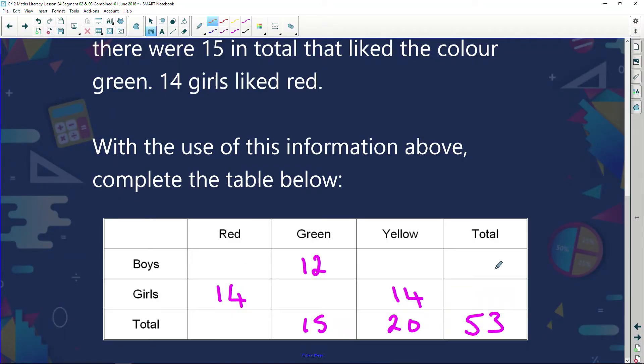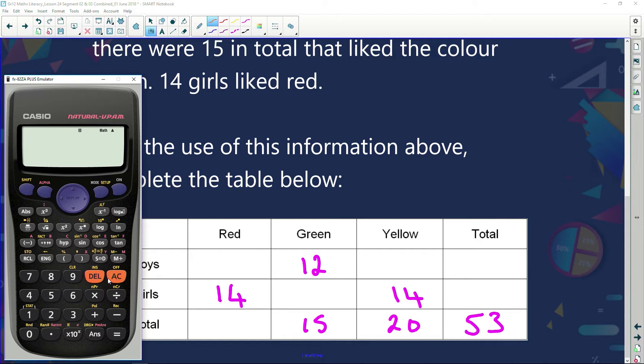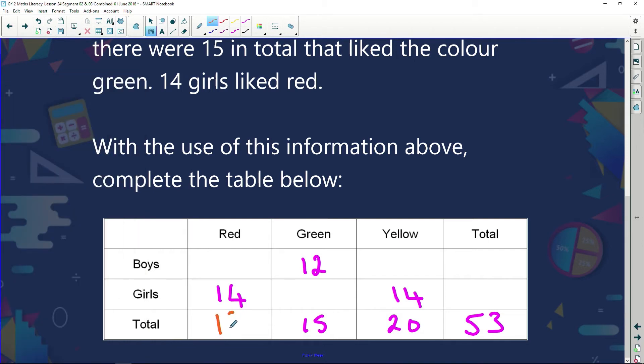Remember, to fill in the missing bits, we've got to find either rows or columns that have only got one bit of information missing. We've got a total of 53, so we're going to say, Mr. Calculator, we need your assistance and guidance here. I've got a total of 53 students, of which 20 love yellow, 15 like green, which leaves me with a total of 18 that like red. Now because I have this, I can work out how many boys like red. Well, if there are 14 girls and a total of 18, there must be 4 here who like the colour red.